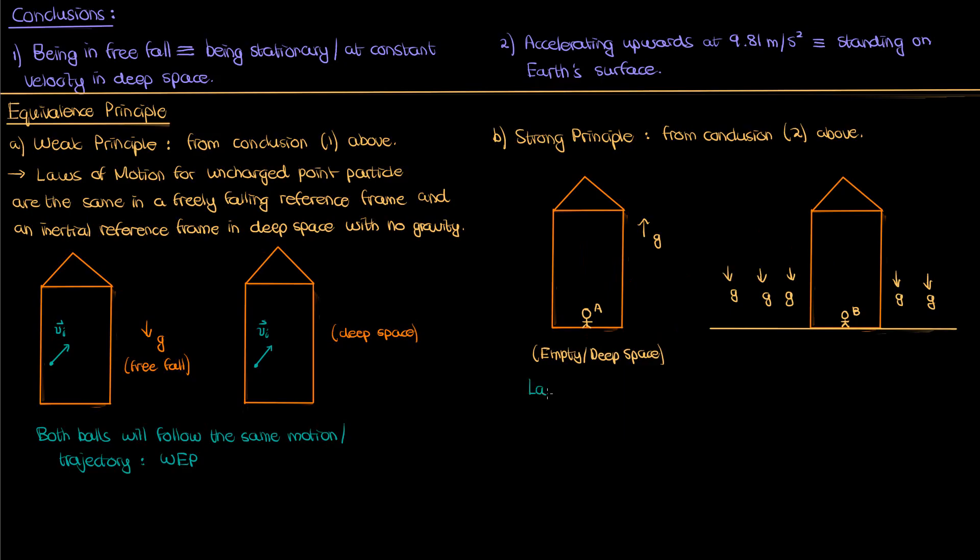The strong equivalence principle says that the laws of physics, so not just the laws of motion but the laws of physics observed by observer A are equivalent to those observed by observer B. Without looking outside there is no way for either A or B to tell whether they're in a rocket accelerating up or whether they're resting on the ground in an area with a uniform gravitational field of g. In technical terms you can translate without looking outside to via a local experiment. A local experiment is just an experiment that only interacts with the inside of the rocket over a small region of space-time. It is localized to the small region of space-time of the rocket and the rocket alone.